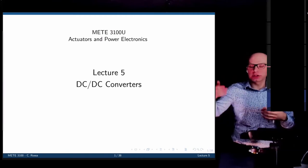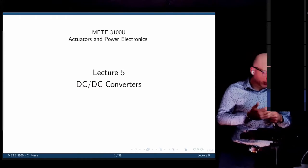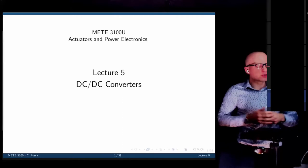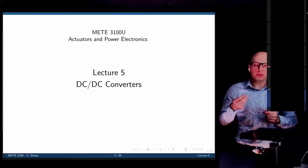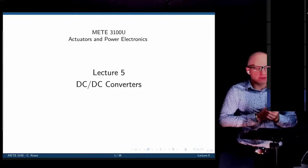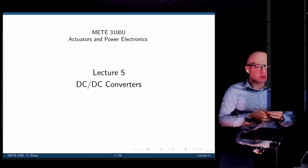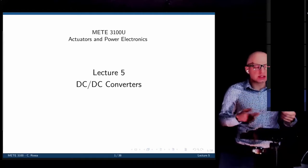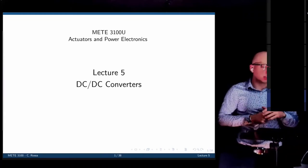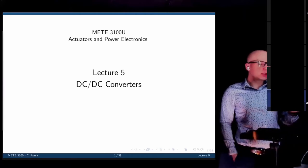Converting DC levels through rectification from a transformer is not efficient. We would need a transformer that can change a turn ratio and then rectify that voltage to create a DC voltage. We cannot use transformers to convert DC levels from one level to another because transformers only work in AC — we need a changing magnetic field to create induction. So now we need to look at an alternative to go from DC to DC.